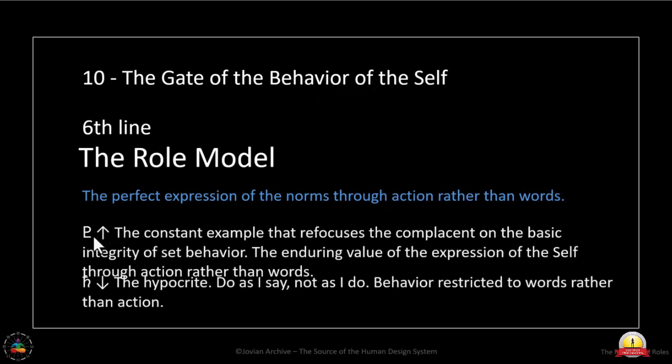So if we look at the Pluto exaltation: the constant example that refocuses the complacent on the basic integrity set of behavior — the enduring value of the expression of the self through action rather than words. Saturn detriment: the hypocrite — do as I say, not as I do — behavior restricted to words rather than action.